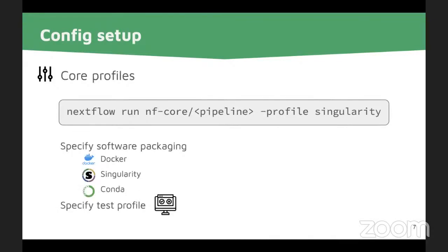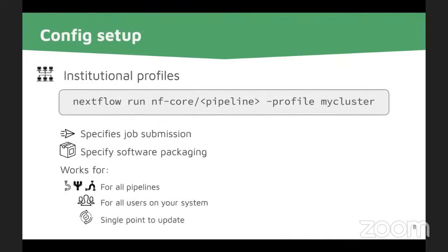To get software packaging, you can specify core profiles — for example, Singularity, Docker, or Conda — and you set them by typing `-profile` and then the specific software packaging you'd like. Each pipeline also comes with a test profile, which runs with a tiny test dataset to check whether your pipeline runs at all on your system. So you can type `-profile test,singularity`, for example, to execute the test run with Singularity.